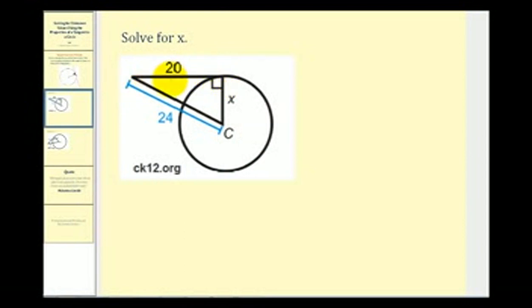Here we're given a tangent segment and the radius of the circle drawn to that point of tangency, which we know forms a right angle. So now that we know we have a right triangle here, we can use the Pythagorean theorem to determine the value of X.